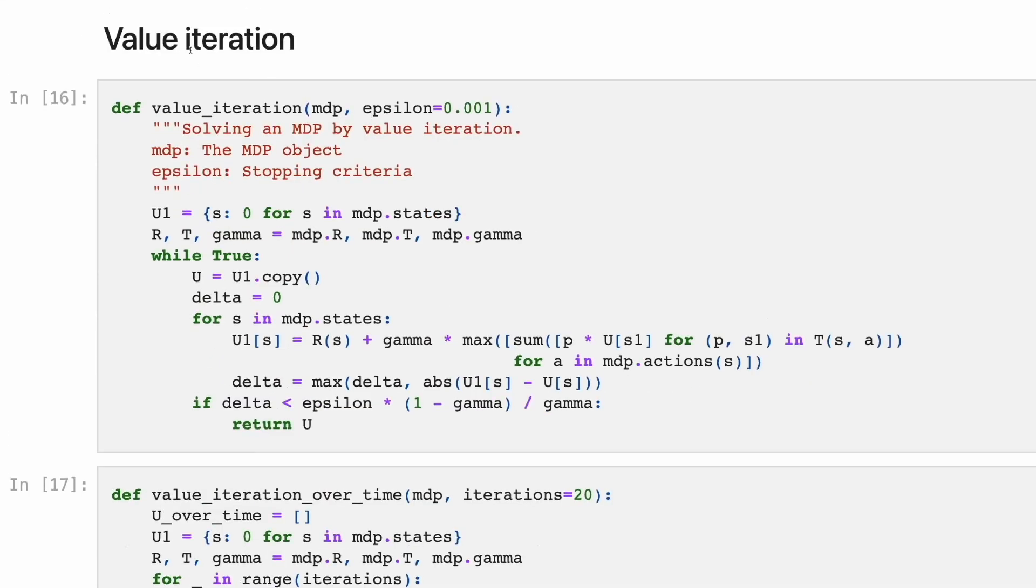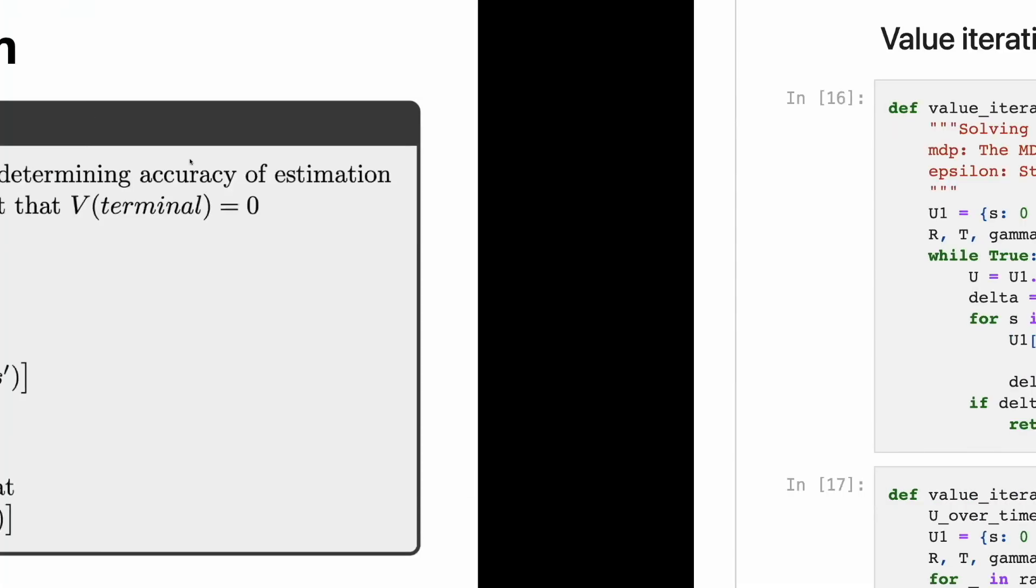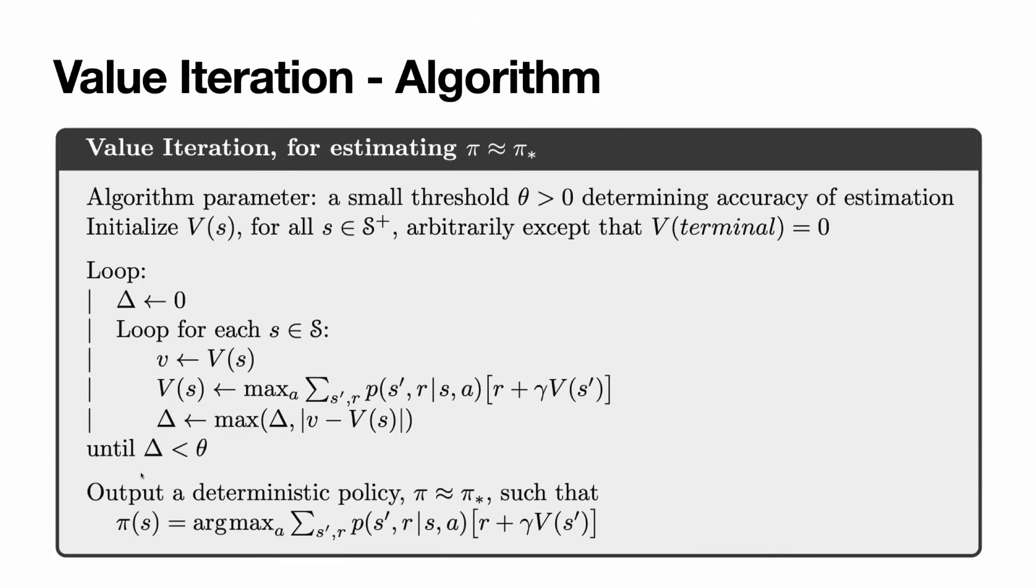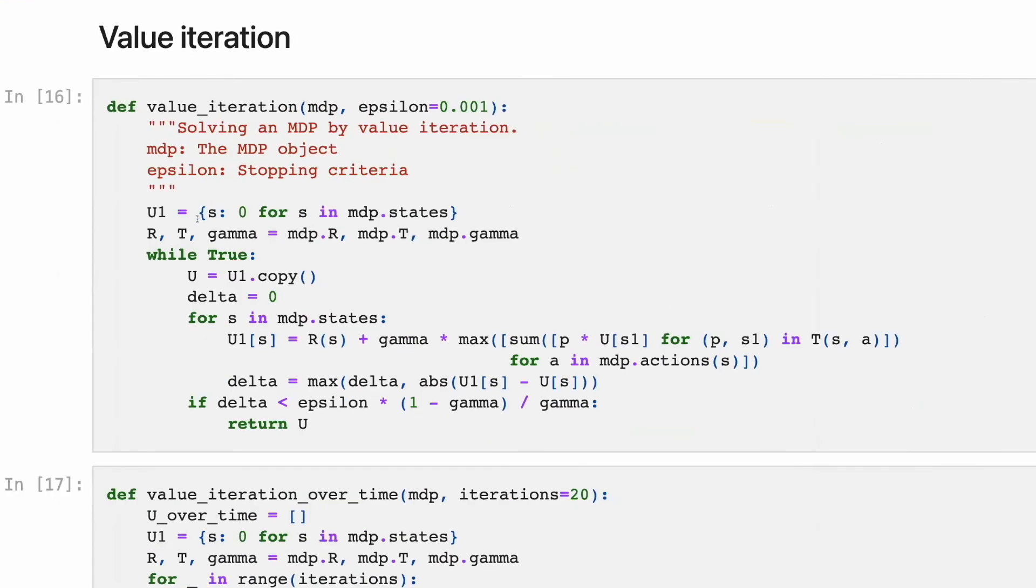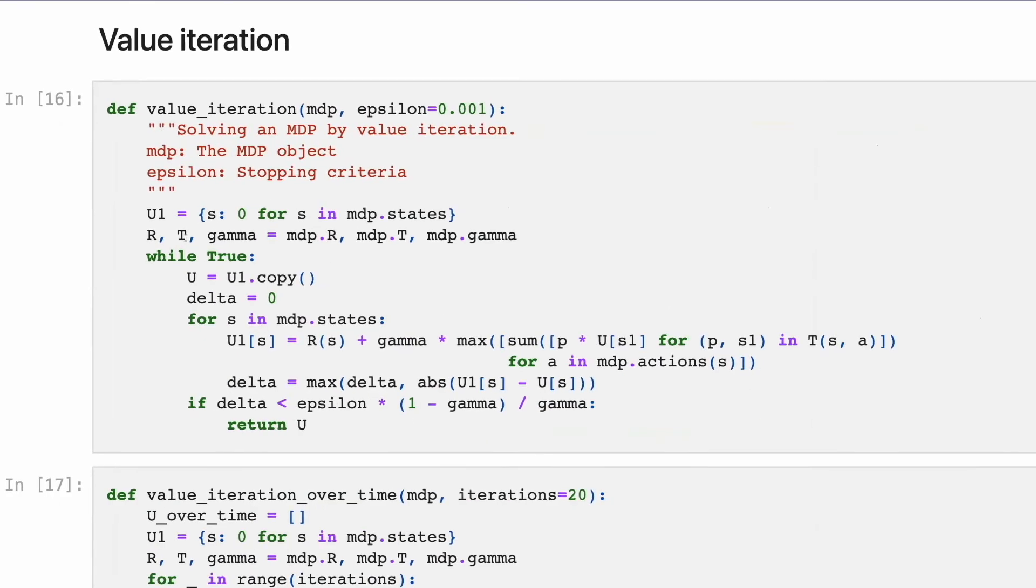Here is the implementation of value iteration. Let's get back to schema to refresh it. We are looping over infinite loop, calculating value function, and then choosing a policy based on a best action from the set of possible. Here, we record all the states. Then, we read in the reward schema, the transition probabilities, and the discount.